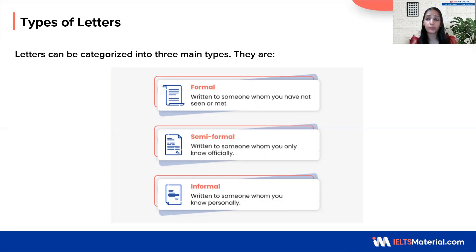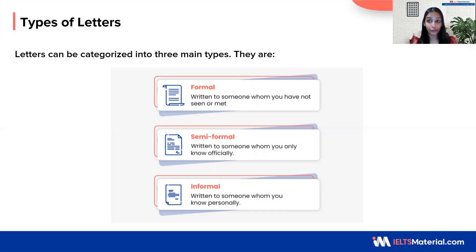For example, it could be the landlord or it could be your postal warden. Next, informal. You write it to someone whom you know personally. Usually, they are your friends and family members. There is a specific kind of language to be used for these three letters. Let's understand.